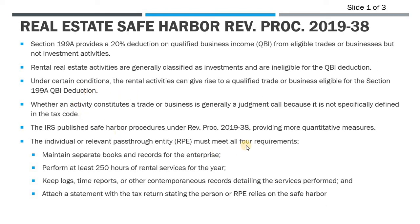For this video, I wanted to talk about the Section 199A QBI deduction for rental real estate properties. Section 199A was implemented in 2017 with the Tax Cuts and Jobs Act, and what it does is provide a 20% deduction on qualified business income. In order to have this QBI, you have to have income flowing through from an eligible trade or business.